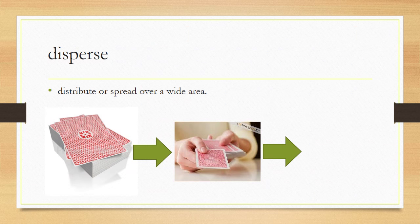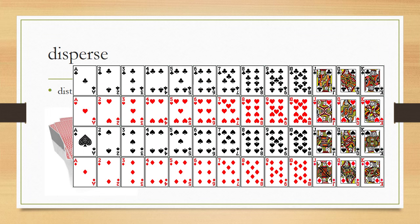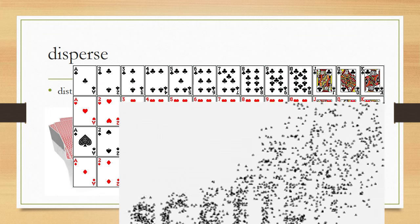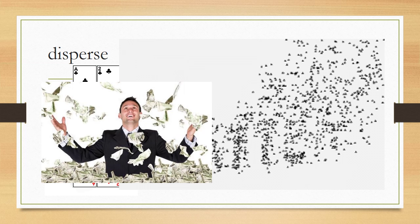The word disperse is an action word, and it means to distribute or spread over a wide area, or to scatter. As you can see, this deck of cards is in one pile, but as we follow the chain of events, we see them being handed out — this is a form of being dispersed. The cards are dispersed; they are scattered. Here are a few little black dots dispersing from the word scatter. And here is a man who is dispersing money up into the air.